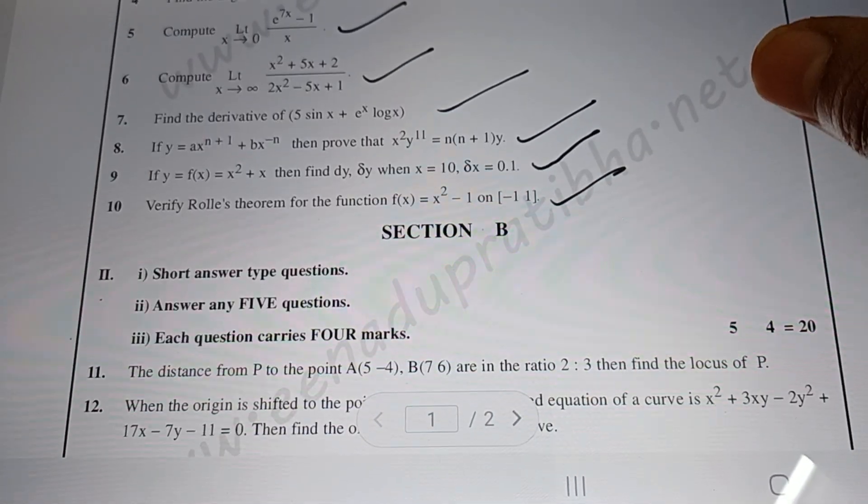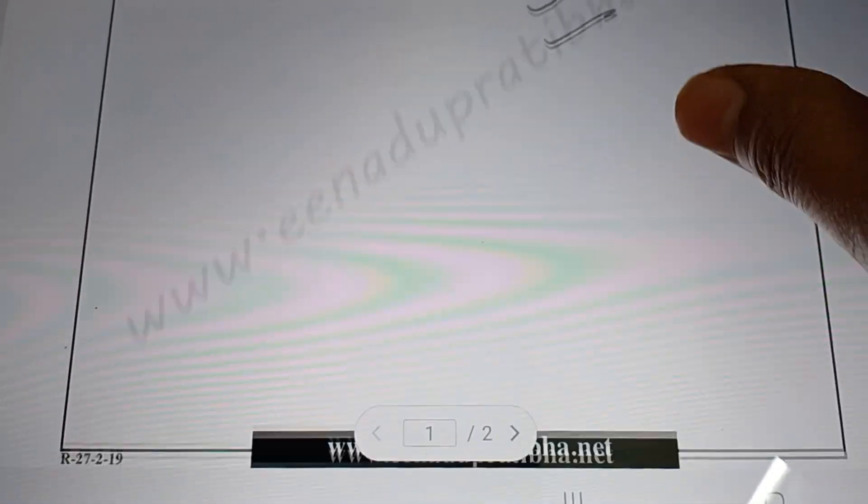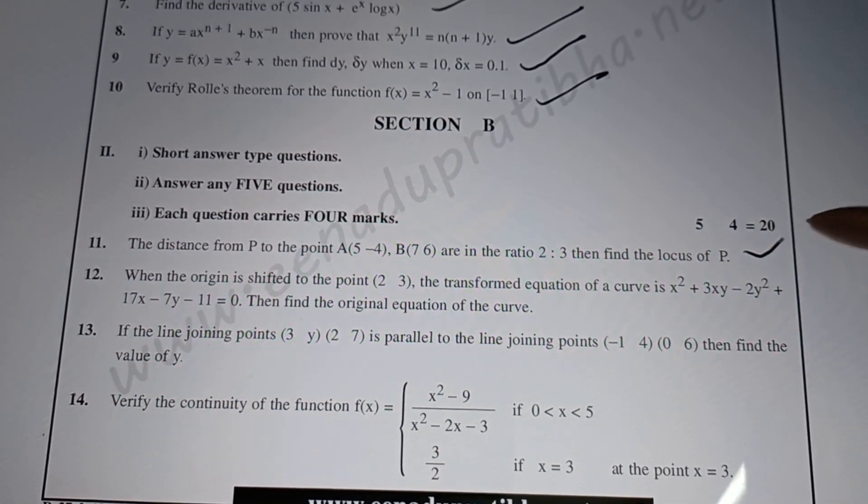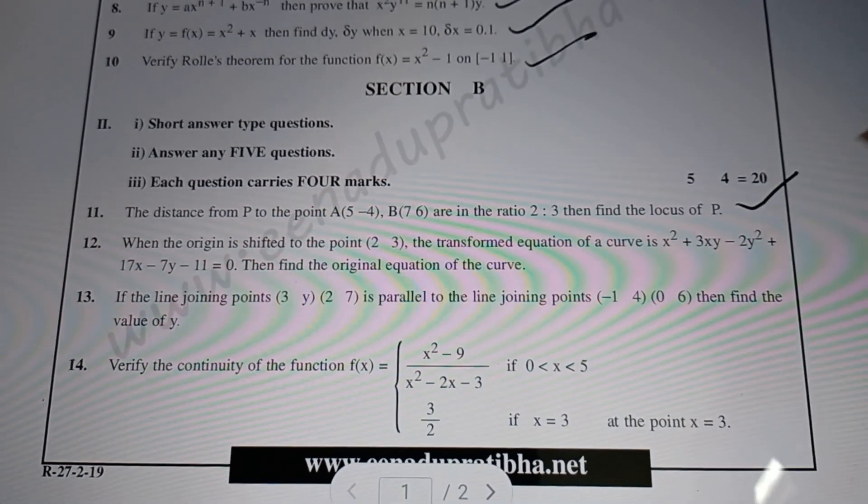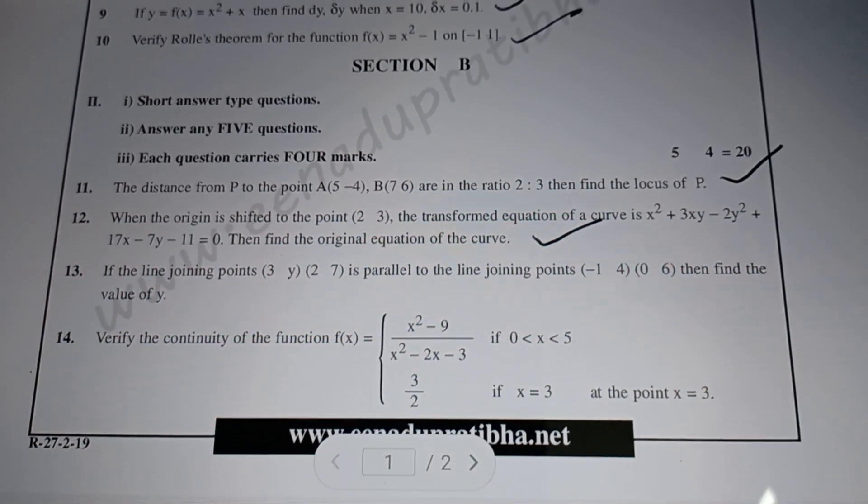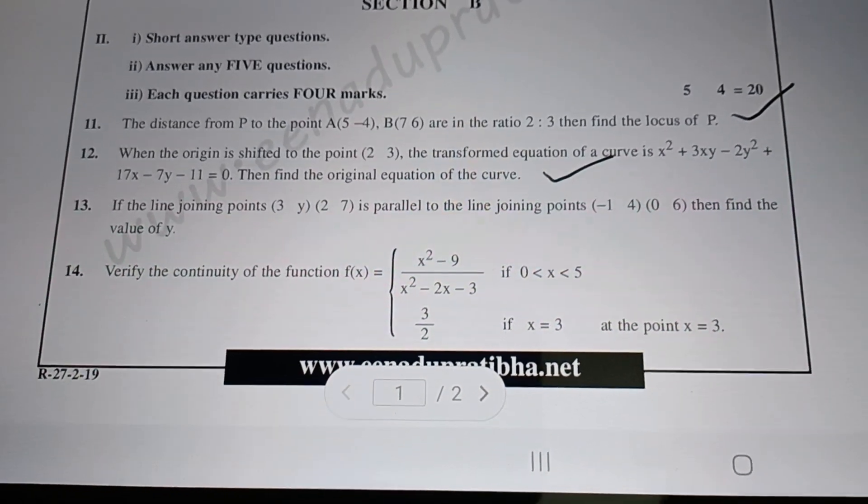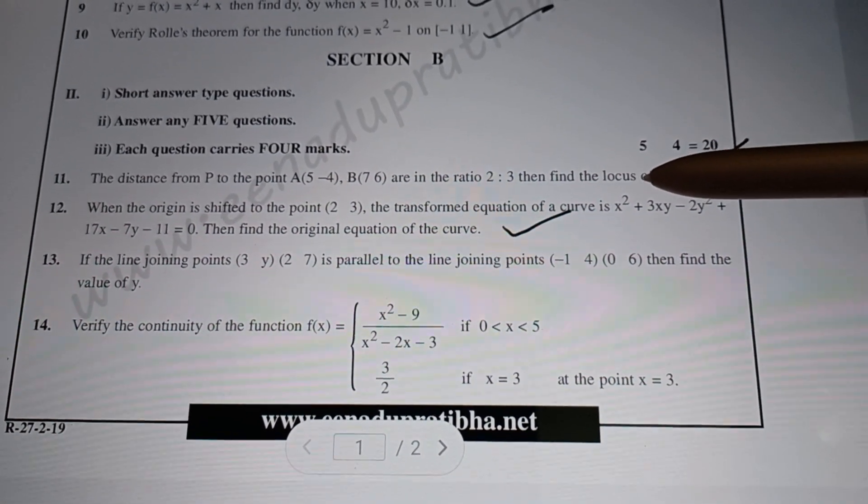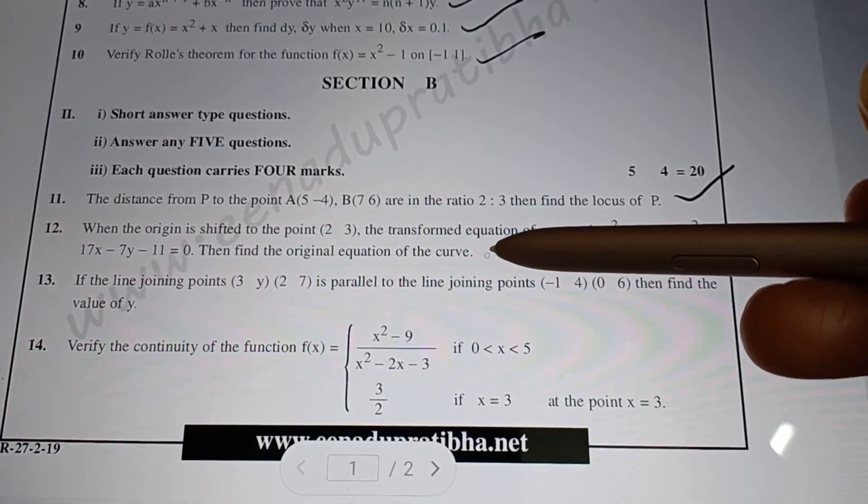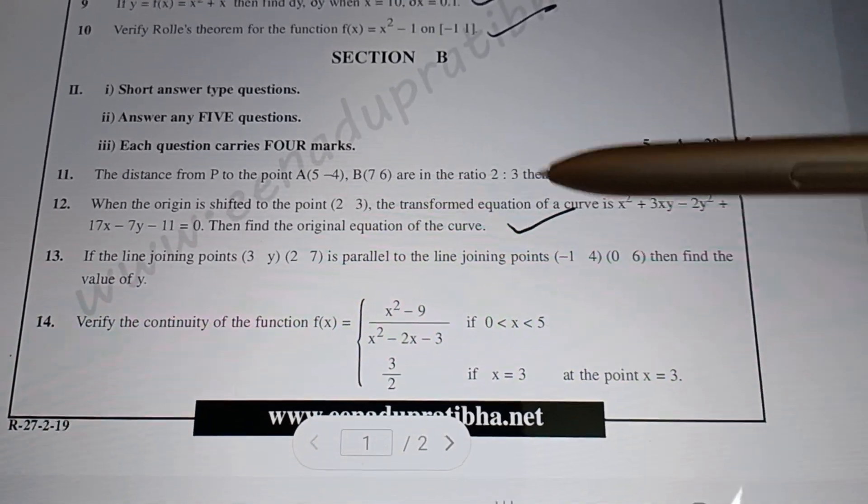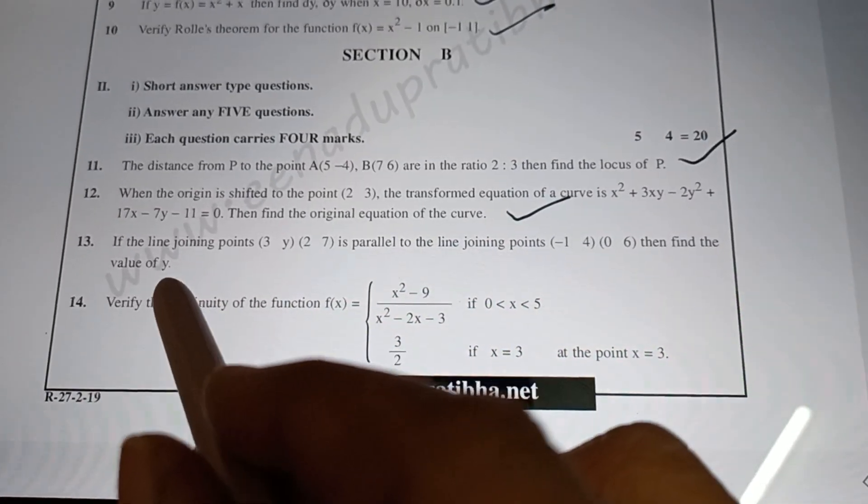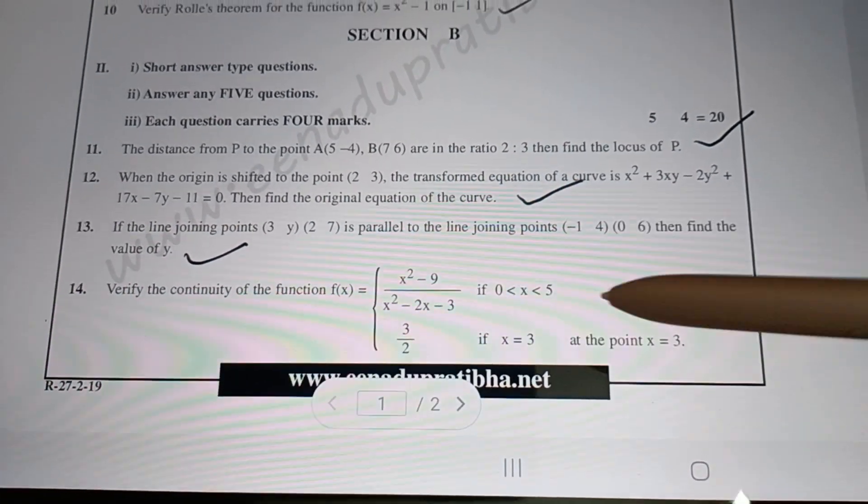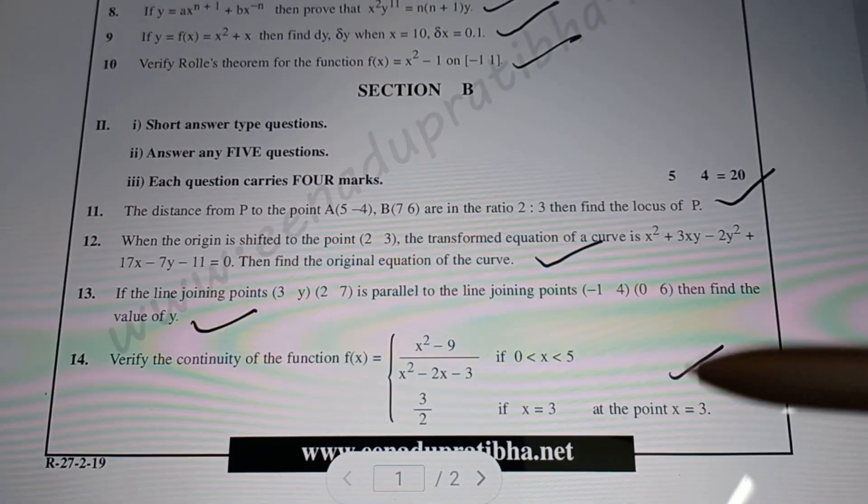In Section B, question 11 is always on locus - 4 marks. Question 12 is on transformation of axes - 4 marks compulsory. Question 13 covers straight lines. Question 14 is always on limits - one question guaranteed.